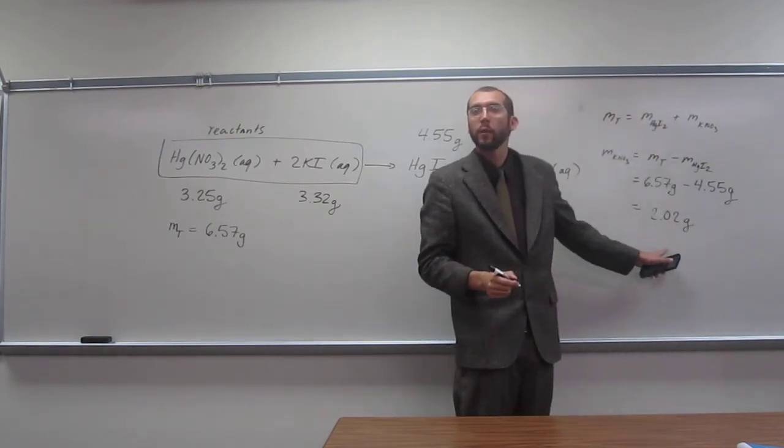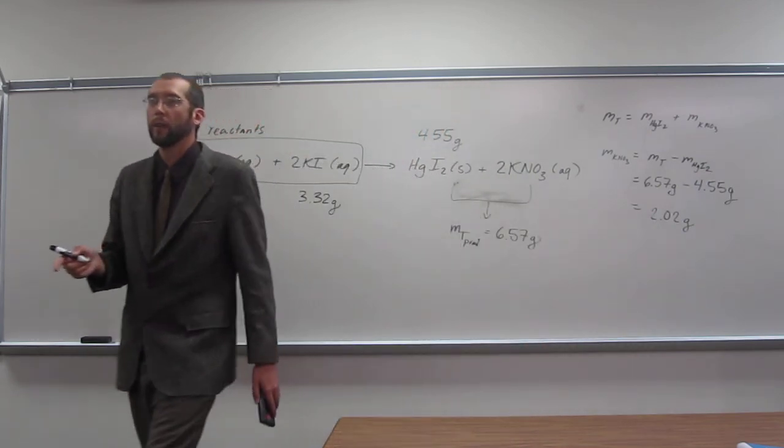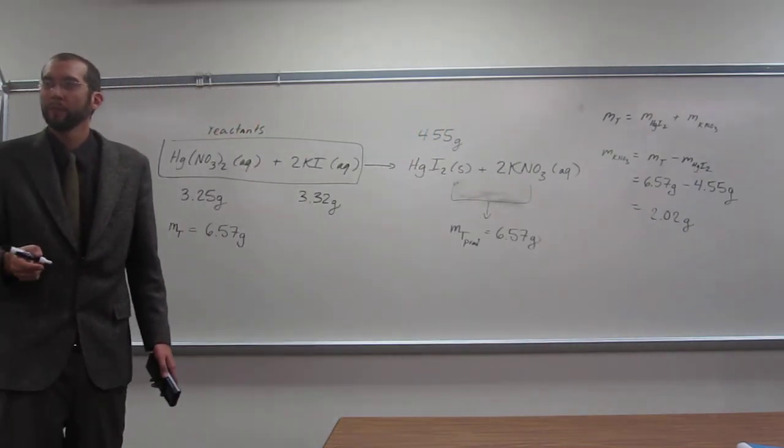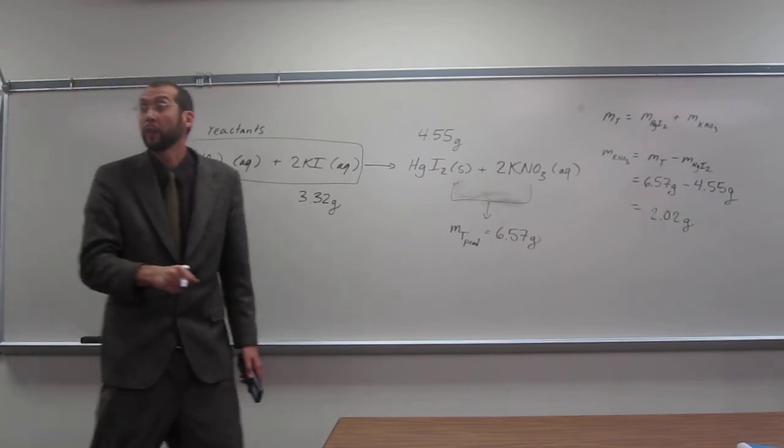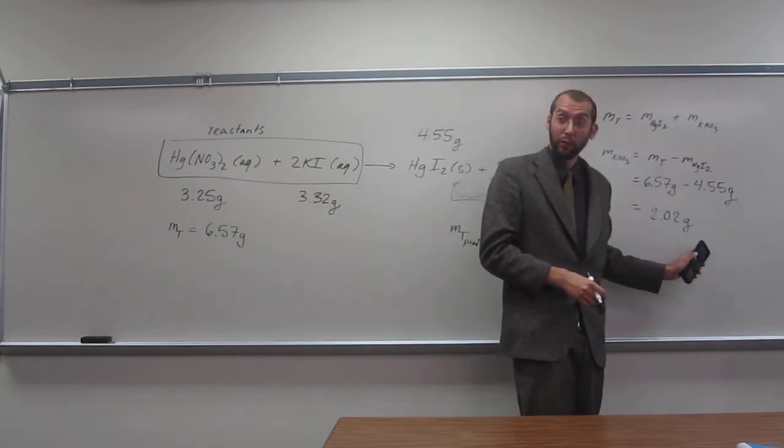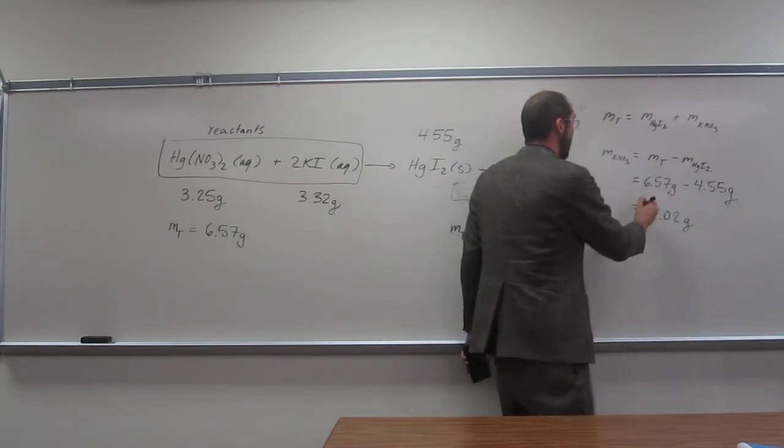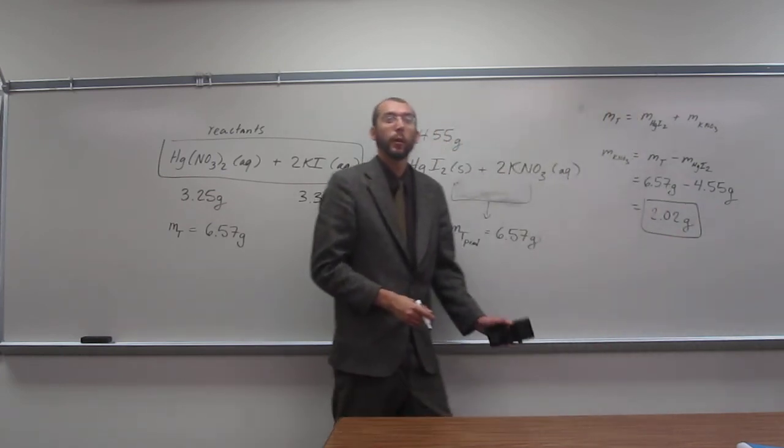And is that the right number of significant figures? Now, why is that the right number? There's two after the decimal points. Both of these have two after the decimal points, so this has to have two after the decimal points. So that's the mass of potassium nitrate. Is everybody okay with that?